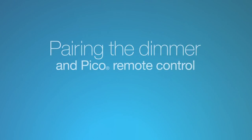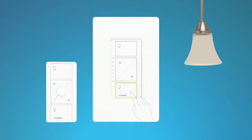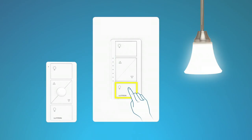Pairing the dimmer and a Pico remote control without a smart bridge or hub. To pair the Pico remote control, press and hold the off button on the dimmer for 6 seconds until the LEDs on the dimmer start blinking. Then press and hold the off button on the Pico remote control for 6 seconds until the light you are controlling flashes 3 times.